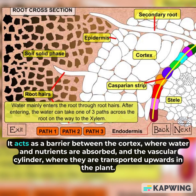It acts as a barrier between the cortex, where water and nutrients are absorbed, and the vascular cylinder, where they are transported upwards in the plant.